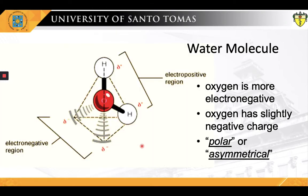The two bonds of a water molecule are highly polar, because the oxygen atom is strongly attractive for electrons, whereas the hydrogen atom is only weakly attractive. Consequently, there is an unequal distribution of electrons in a water molecule, with a preponderance of positive charge on the two hydrogen atoms and a negative charge on the oxygen atom.